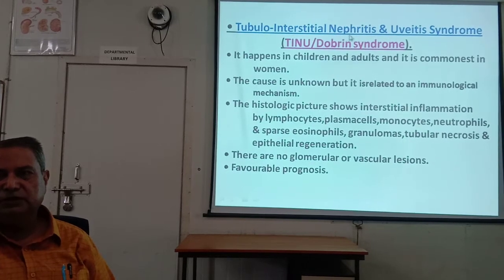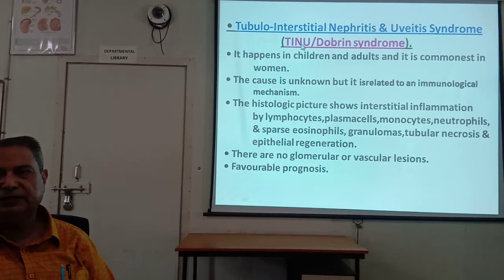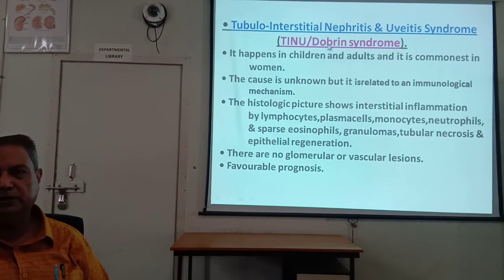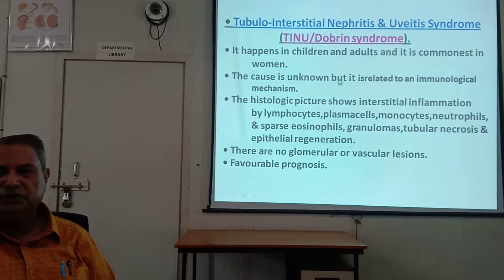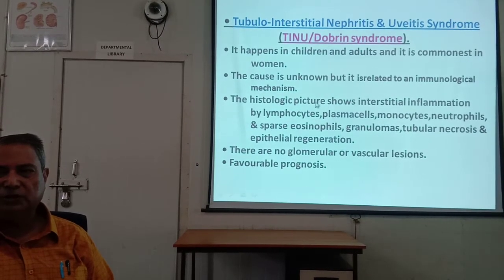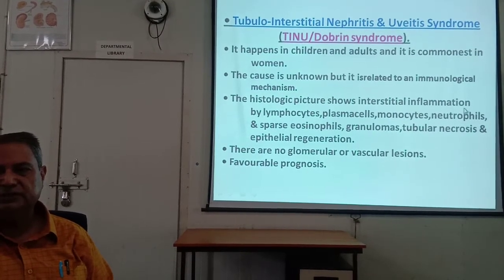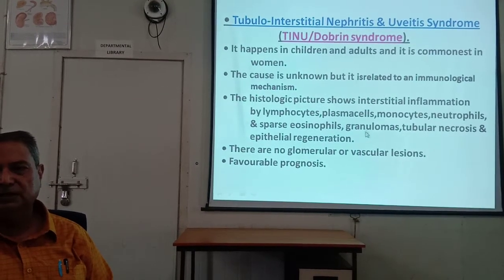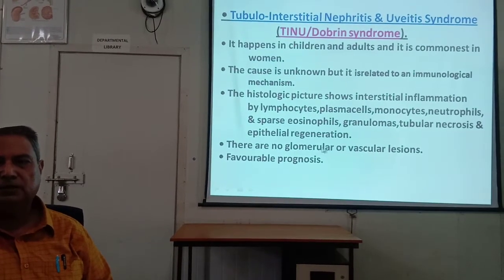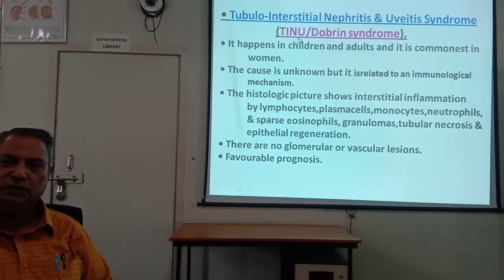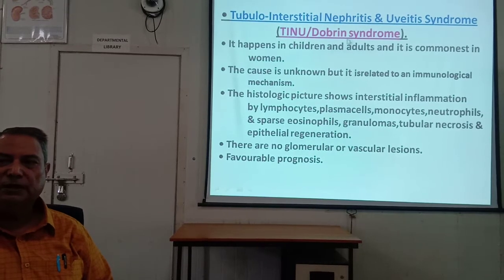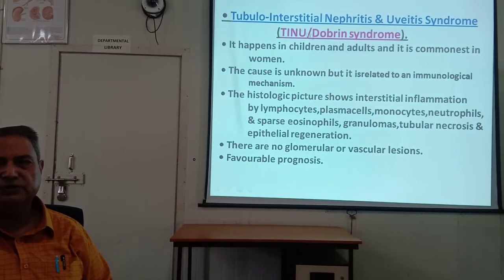Tubulo-interstitial nephritis uveitis syndrome is called Darwin syndrome. It occurs in children and adults, more commonly in women, and the cause is unknown but related to immunological mechanisms. Histologically, interstitial inflammation is seen with lymphocytes, plasma cells, monocytes, neutrophils, eosinophils, granuloma, tubular necrosis, and epithelial regeneration. There is no glomerular or vascular lesion. The prognosis is favorable.